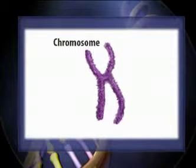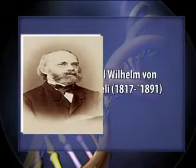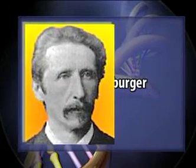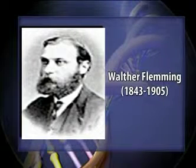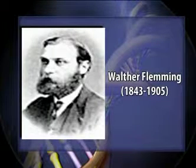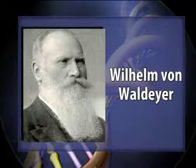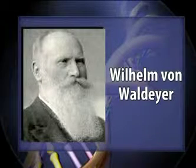The chromosomes were first observed as rod-like structures in plant cells by Carl Willem van Nägele in 1842. Strasburger in 1875 discovered thread-like structures which appeared during cell division. Walter Fleming in 1879 introduced the term chromatin to describe the thread-like material of the nucleus that became intensely colored with stain.